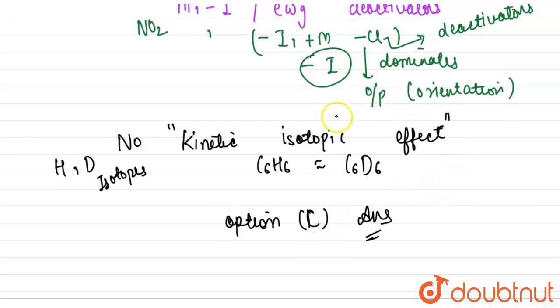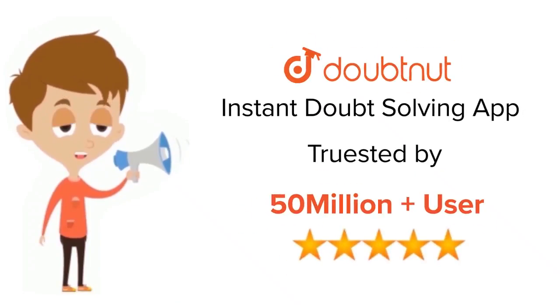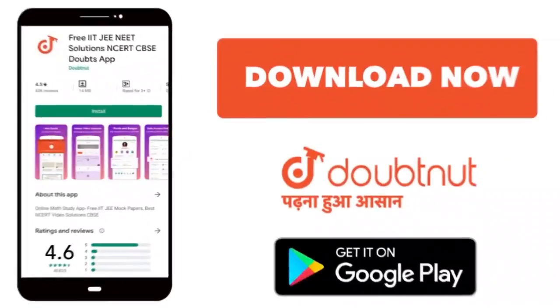So our order is first, second, fourth, third. That makes option number C. Our answer is option number C. For class 6 to 12, IIT-JEE and NEET level, trusted by more than 5 crore students, download Doubtnet app today.